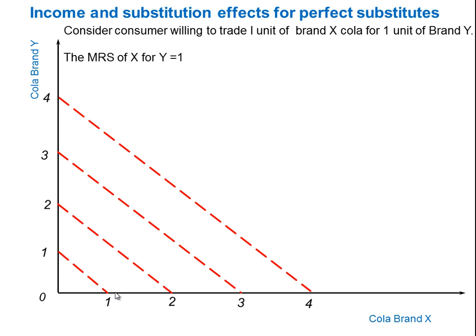What we're saying is that the marginal rate of substitution of X for Y is equal to one. In order to get one extra unit of cola brand X, they'd give up one unit of cola brand Y, and that's constant all the way across. So for this particular consumer, brands X and Y are what they call perfect substitutes. You can probably think of your own brands of cola and whether or not you were entirely indifferent between one brand or another.